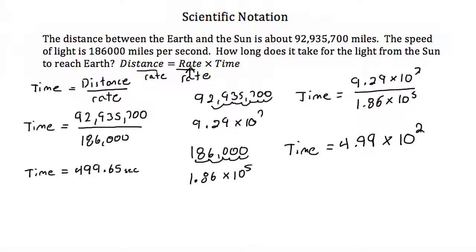So my time then is 4.99 times 10 to the 2nd in scientific notation. If I take that out of scientific notation, I just move my decimal back two more spaces and I end up with 499, which is what we had before.